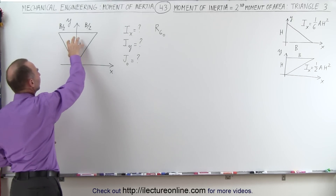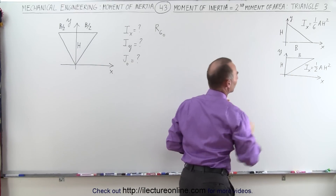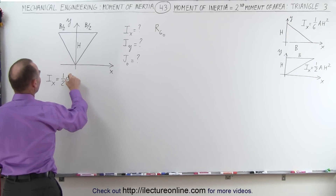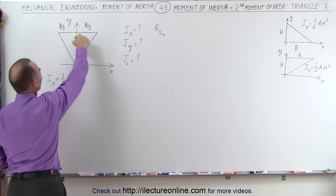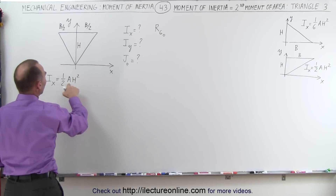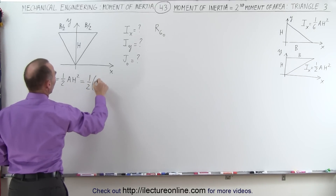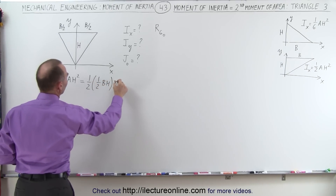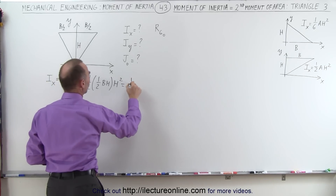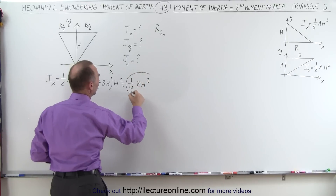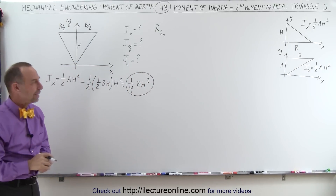This is very similar to what we have over here, so the moment of inertia relative to the x-axis would be equal to 1/2 the area of the triangle times the distance to the base away from the x-axis squared. The area of the triangle equals 1/2 base times height, and multiplying by h squared, this becomes 1/4 times the base times h to the third power.